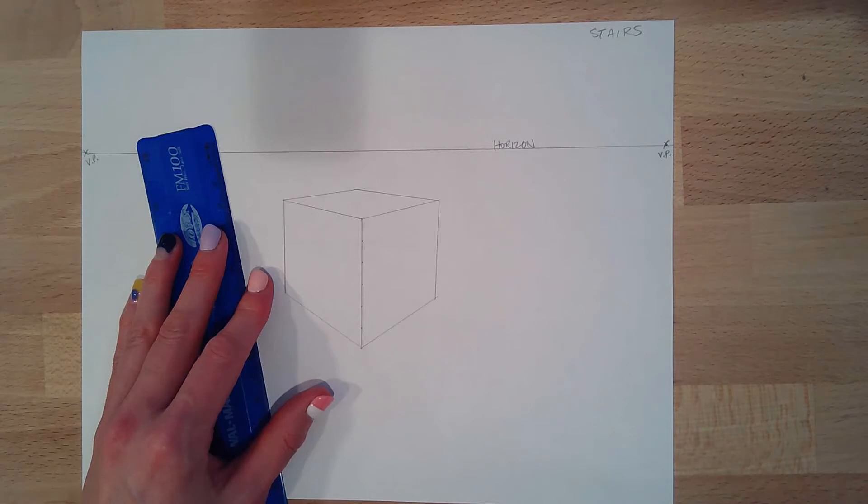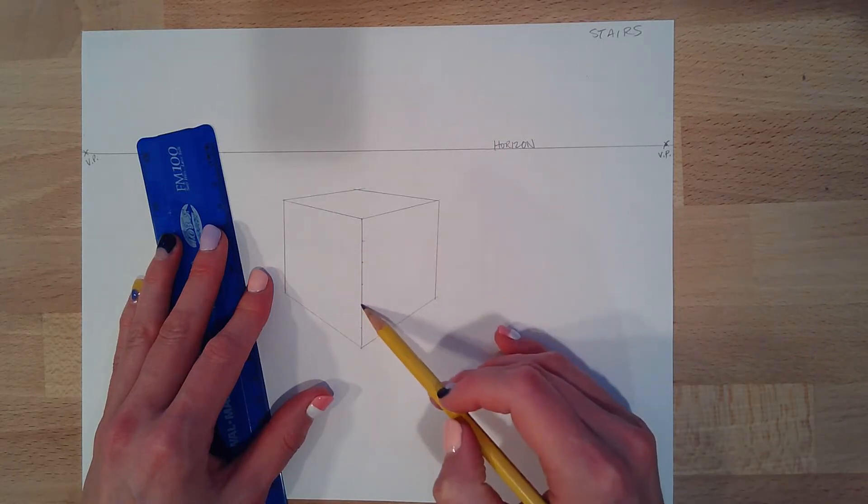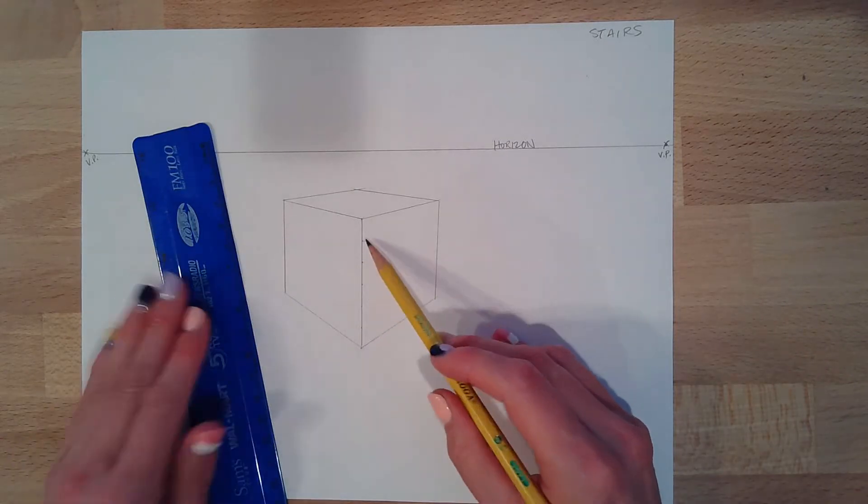So I took my 3D box and I've drawn it below the horizon already. And if you notice, I have spaced where I want my stairs, the distance to be, and they're about even.